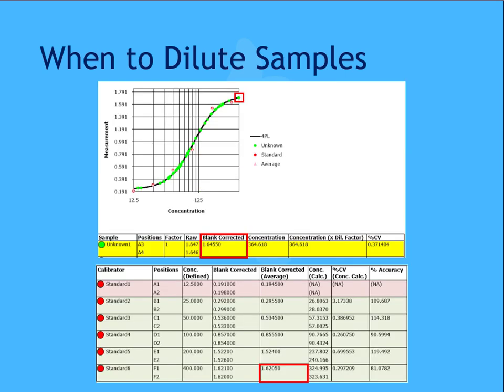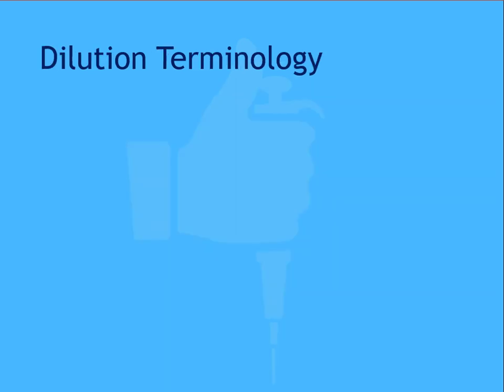Looking at this example a little closer, you can see on the curve chart that unknown one is at the very top of the chart, with no additional standard following this unknown sample. The blank corrected value, 1.64550, is greater than the highest standard value of 1.6205. So although the concentration result is calculable, it is always preferable to report interpolated results, or results that fall within the range of the standards. So once we've identified cases where samples should be diluted, next let's discuss dilution terminology.